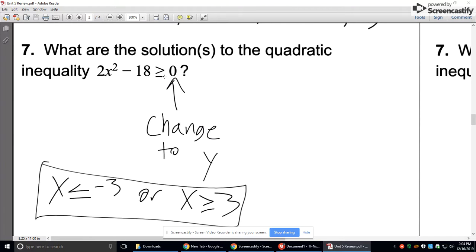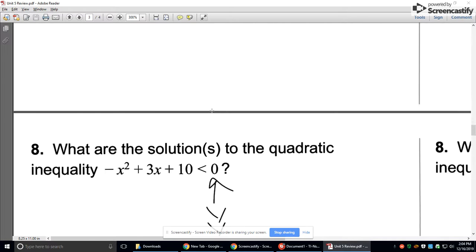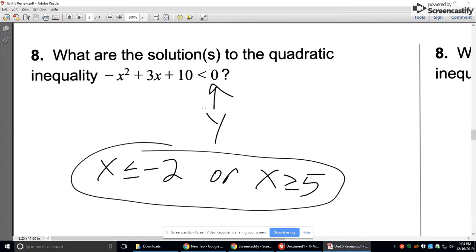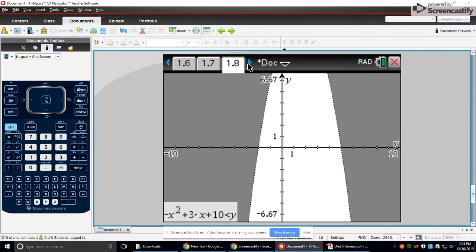So x is less than or equal to negative 3 or x is greater than or equal to 3. I used the or equal to because this original had an or equal to. But yeah, that's all there is to it. So number 8 is the same question. Basically, just replace the 0 with a y and then graph it. So I graphed it.